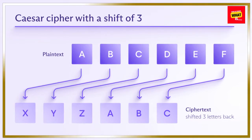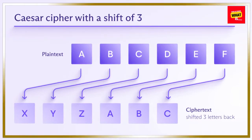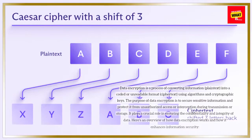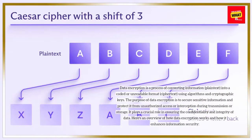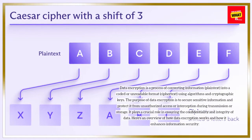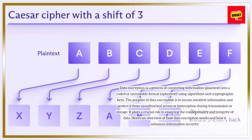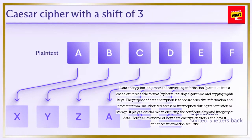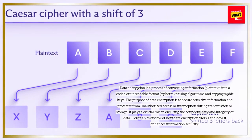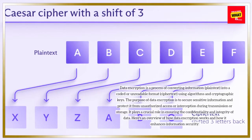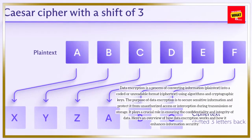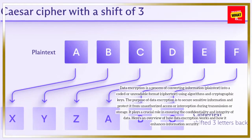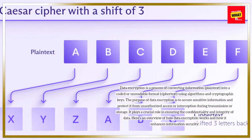Data encryption is a process of converting information, plain text, into a coded or unreadable format, ciphertext, using algorithms and cryptographic keys. The purpose of data encryption is to secure sensitive information and protect it from unauthorized access or interception during transmission or storage. It plays a crucial role in ensuring the confidentiality and integrity of data.